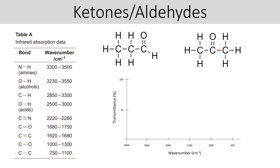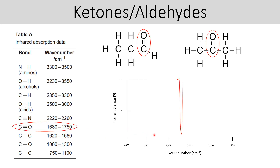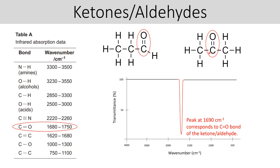Let's have a look at ketones and aldehydes. The defining bond of both is the C=O, the carbonyl, and both would be in the same range. A simplified infrared spectrum for these would show a peak at around 1,690 corresponding to the carbonyl bond of the ketone or aldehyde. Notice how you might struggle to differentiate between a ketone and an aldehyde as they both contain the same defining covalent bond, so you could use Tollens' reagent or Fehling's solution to distinguish between them chemically.